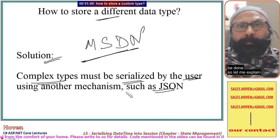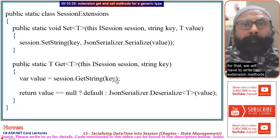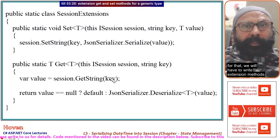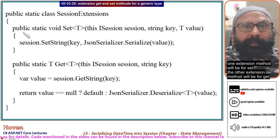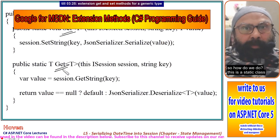So let me explain how do we do this. For that, we will have to write extension methods. One extension method will be for set. The other extension method will be for get.